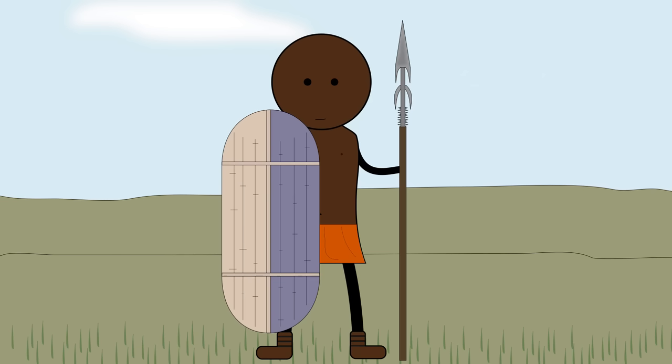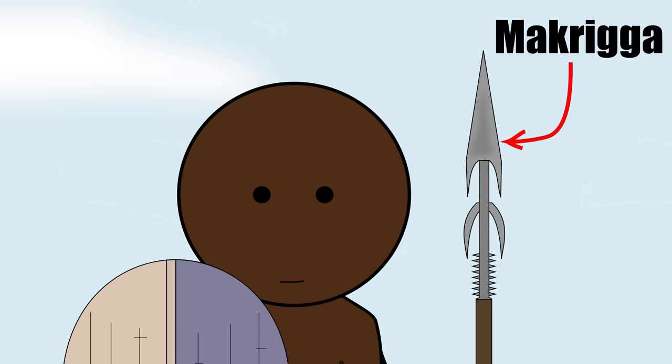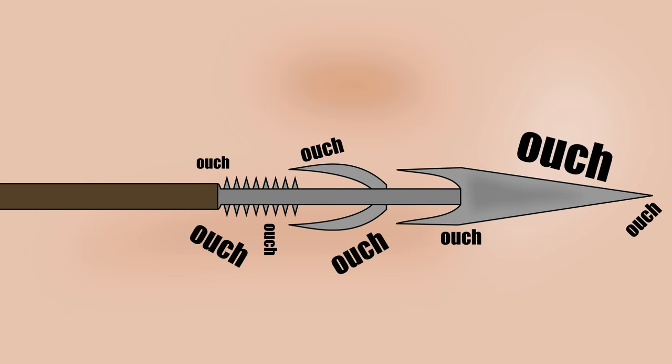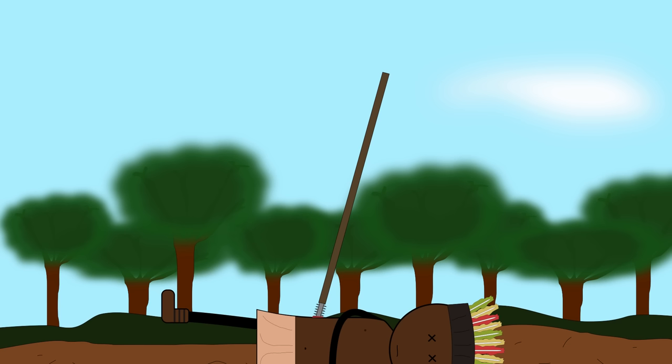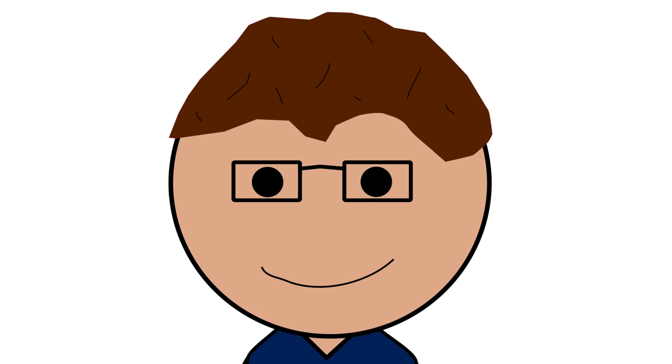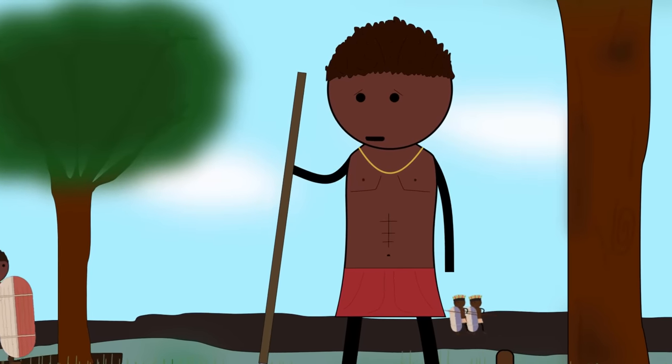The Zandi also used this spear called the Makriga, which looks frickin' sick and probably hurt a lot, but it was always getting stuck in people's bodies, which was kind of inconvenient in the middle of battle. Come on, come on, come on!